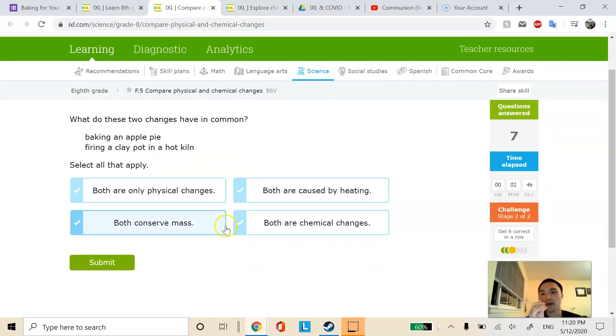Next one. Baking an apple pie, firing a clay pot in hot kiln. So both of these obviously occur because of heating. So I would pick both are caused by heating in this example. And both conserved mass. That is also a true statement. This is always true no matter what the statements are. So that's also true. Are both these chemical changes? Baking an apple pie? Yes. Firing a clay pot? Yes. You can't get it back to its original form. So I'd actually pick three answer choices for that.